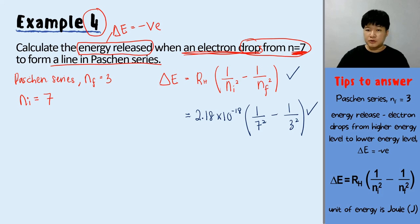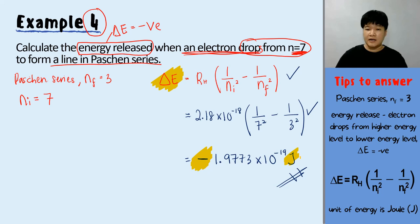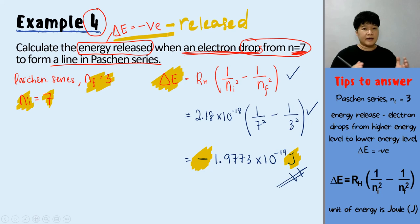The formula is delta E equals Rh times 1 over N initial squared minus 1 over N final squared, with the Rydberg constant 2.18 times 10 to the power of negative 18, 1 over 7 squared minus 1 over 3 squared. Press your calculator correctly — your answer should have a negative symbol. The final answer is negative 1.9773 times 10 to the power of negative 19 joules.